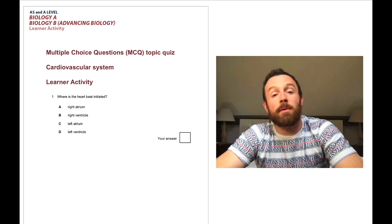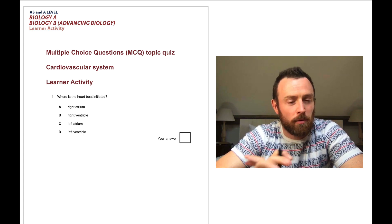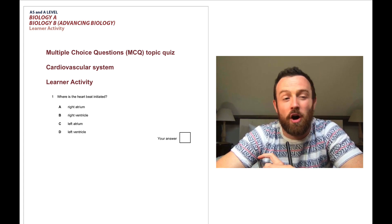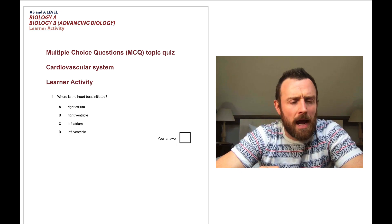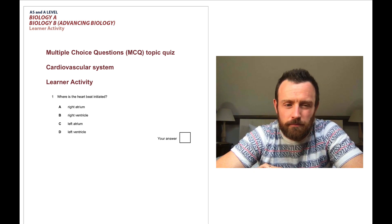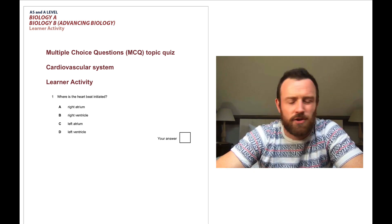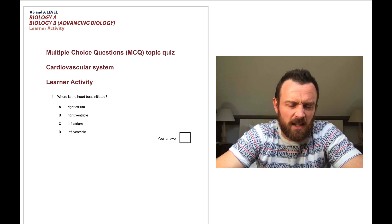Hi, welcome to this video where we're going to look through the multiple choice questions which are published by the OCR exam board, and they are on the circulatory system. The unit is called Transport in Animals, Unit 3.2, Module 3.2.